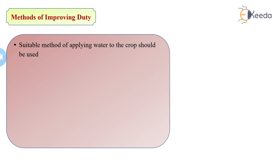First of all, we should use a suitable method of applying water. We have various techniques: sprinkler irrigation, drip irrigation, wild flooding, furrow irrigation, and border strip flooding. In flooding techniques, the losses and wastage of water are more, so the duty will be less. If we want to improve duty, we should select sprinkler, drip, or furrow irrigation, where losses will be less and duty will be more.